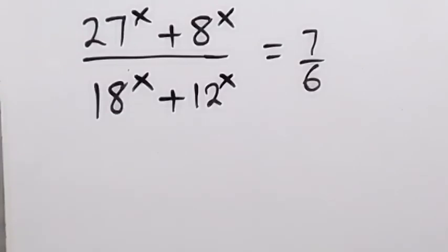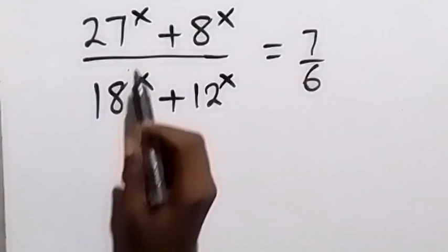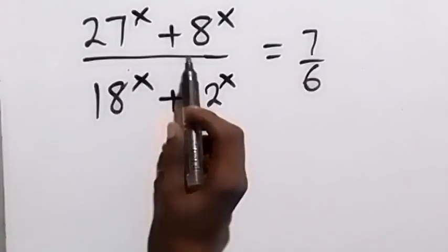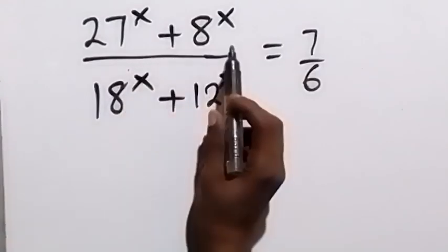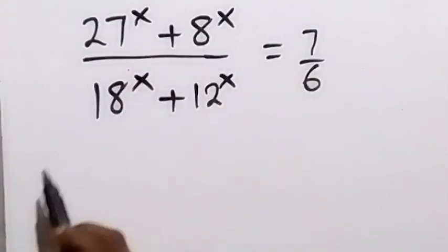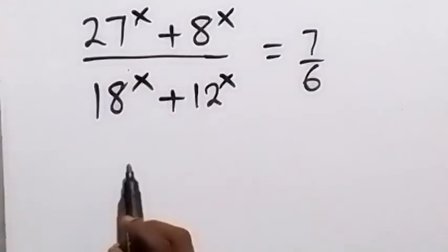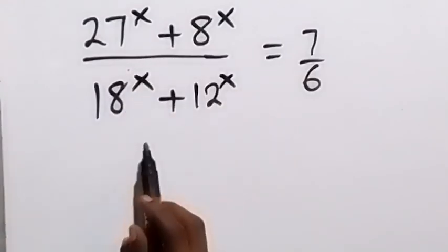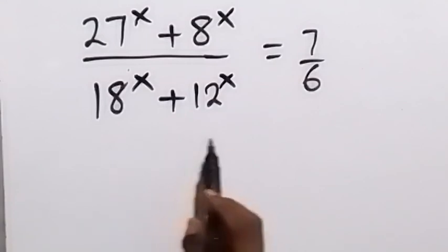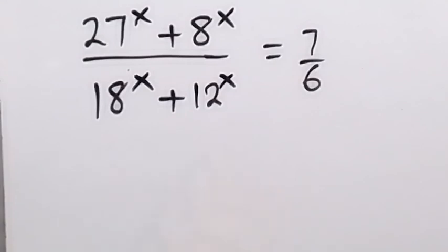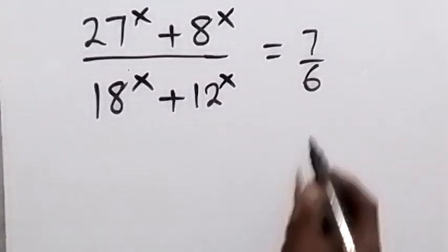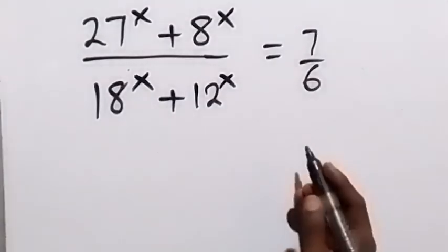Hello, you are welcome. How to solve this problem: 27 raised to power x plus 8 raised to power x, divided by 18 raised to power x plus 12 raised to power x, equals 7 over 6.